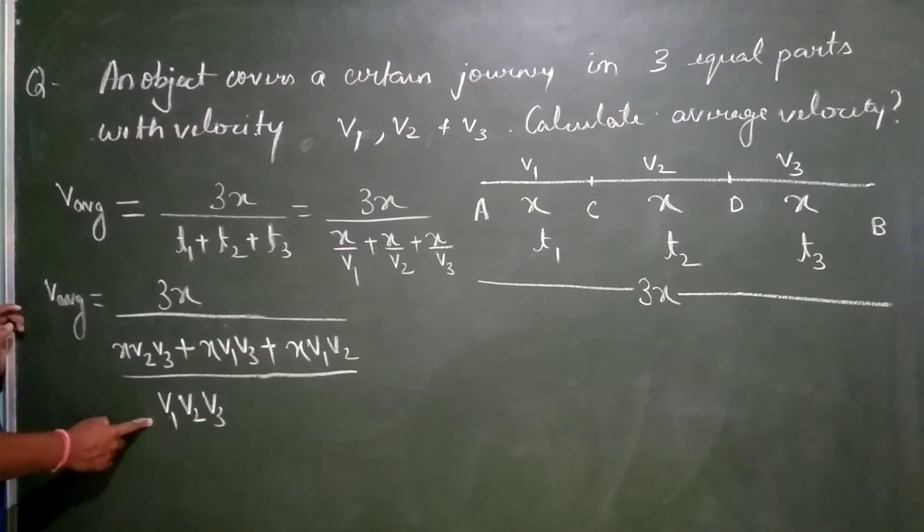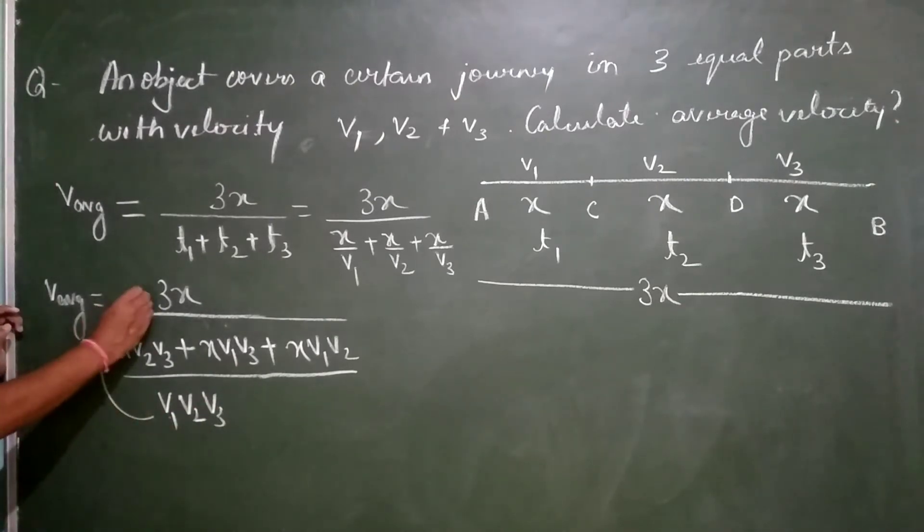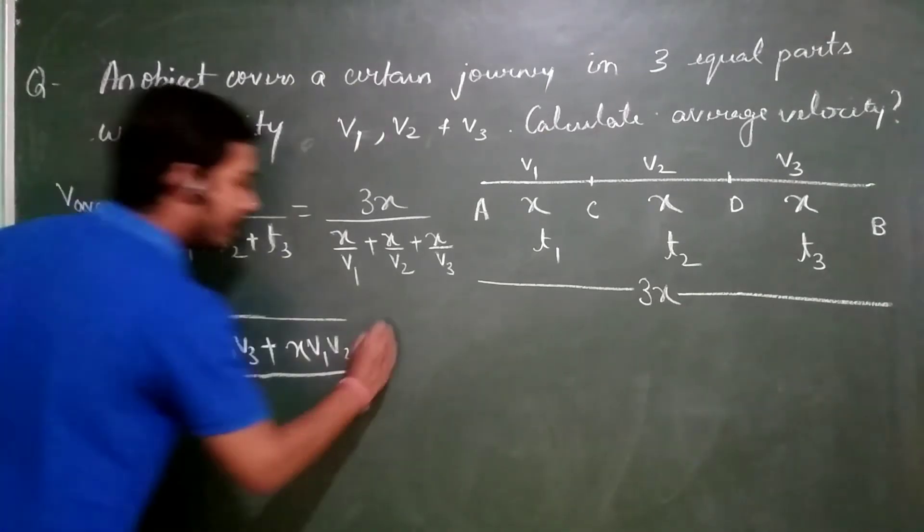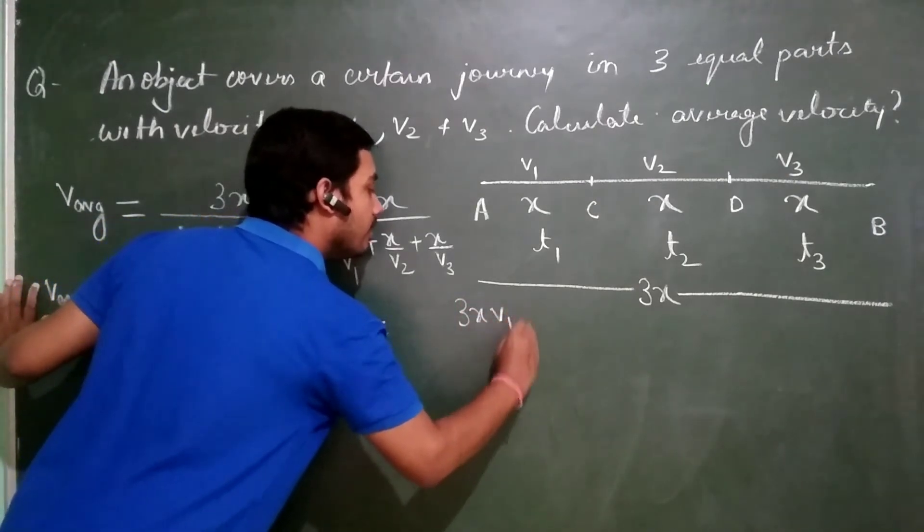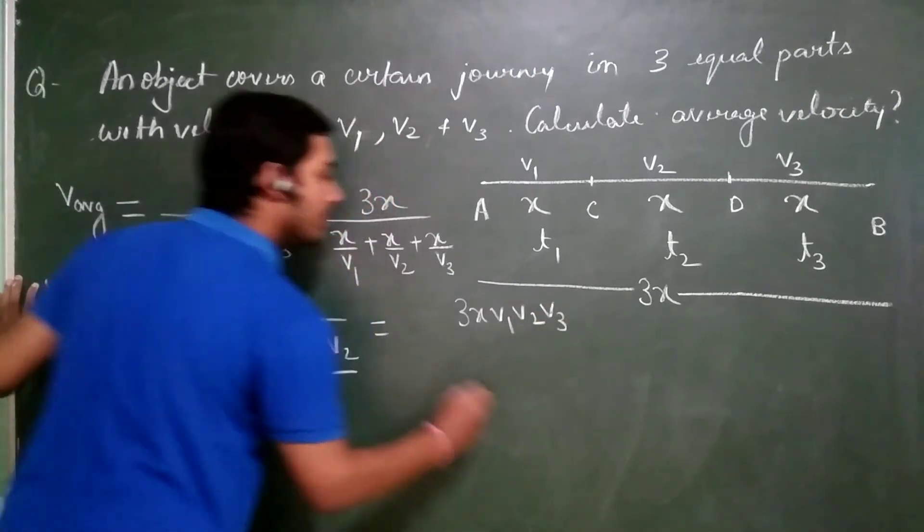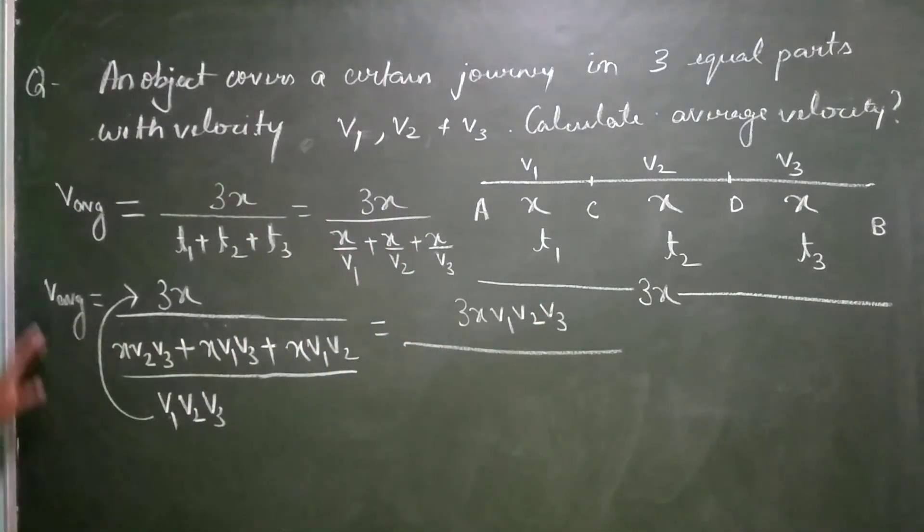This part lies in the denominator of the denominator. This will go up. So what I will get? 3x V1, V2, V3 divided by. Now, I am writing them in order. And what else can I take? I can take X as common. X is common.